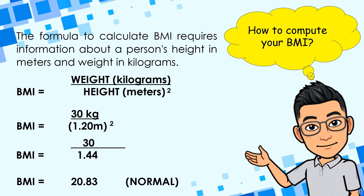How to compute your body mass index or BMI? The formula requires information about a person's height in meters and weight in kilograms. BMI equals weight in kilograms over height in meters squared. For example, if you have a weight of 30 kilograms and a height of 1.20 meters: BMI equals 30 divided by 1.20 squared, which is 30 over 1.44. Dividing gives a BMI of 20.83, which is classified as Normal.